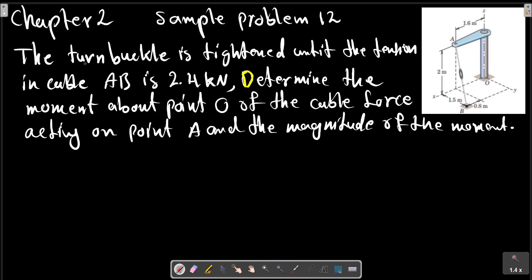Chapter 2, sample problem 12. The turnbuckle is tilted until the tension in cable AB is 2.4 kN. Determine the moment about point O of the cable force acting on point A and the magnitude of the moment.